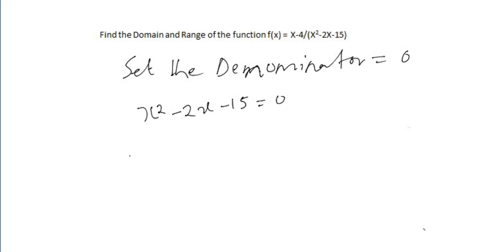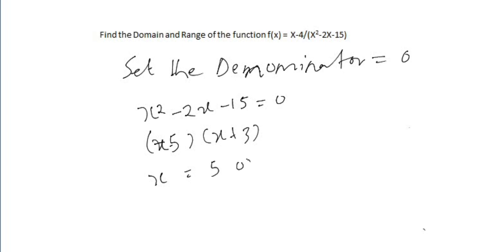Now we solve this equation using the factoring method. We get (x - 5)(x + 3) = 0, therefore x = 5 or x = -3. These are the roots of the equation.